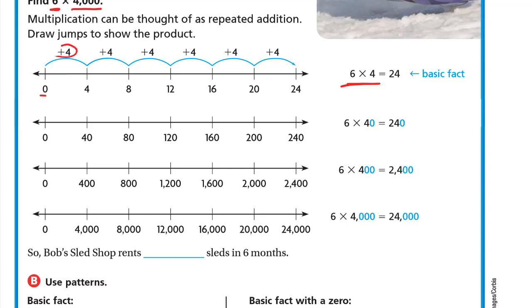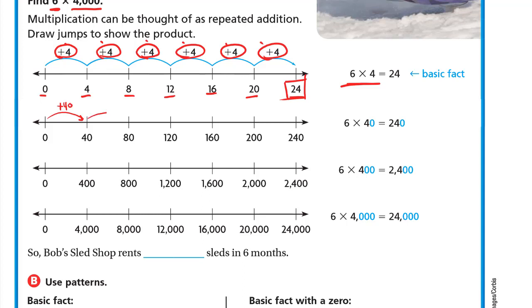Starting at zero: add 4 to get 4, plus another 4 is 8, then 12, 16, 20, 24. We added four six times, so 6 times 4 is 24. For 6 times 40: start at zero, add 40 to get 40, plus 40 is 80, then 120, 160, 200, 240. So 6 times 40 equals 240.